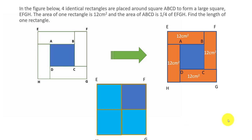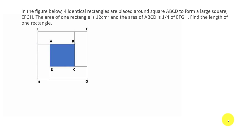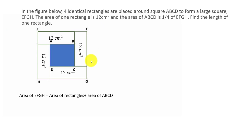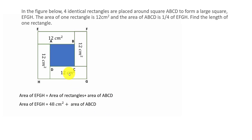Now let's go ahead and solve this problem. To solve it, let's write an equation. Area of EFGH equals the area of all four rectangles, which is 4 times 12, plus the area of ABCD. So area of EFGH equals 48 cm² plus area of ABCD. There is another fact given: the area of ABCD is one fourth the area of EFGH.